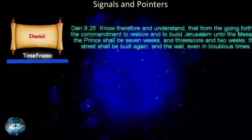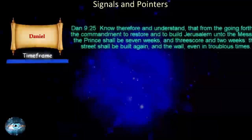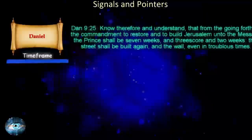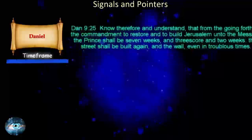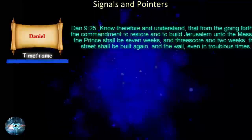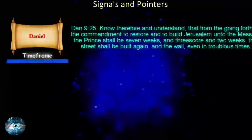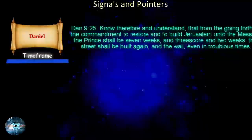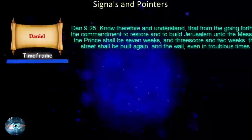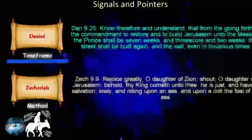Daniel 9:25: Know therefore and understand, that from the going forth of the commandment to restore and to build Jerusalem unto the Messiah the Prince shall be seven weeks, and threescore and two weeks: the street shall be built again, and the wall, even in troublous times. 69 weeks of years, or 483 years after the decree was given to rebuild Jerusalem by Artexerxes, Jesus rode into Jerusalem on a donkey. In Zechariah 9, we find a description of how Israel's Messiah would present himself to his chosen nation.